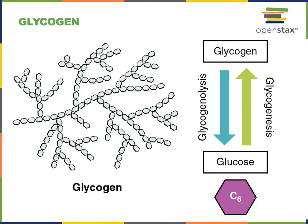Glycogen is a polysaccharide produced in animal cells that is composed of repeating glucose monomers. Glycogen synthesis, or glycogenesis, is a dehydration synthesis reaction catalyzed by glycogen synthase. Glycogenolysis is the hydrolysis of glycogen to release glucose. The enzyme glycogen phosphorylase catalyzes the hydrolysis of glycogen to produce glucose in the mechanism of glycogenolysis.